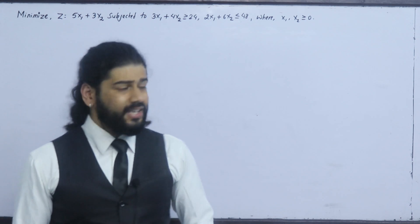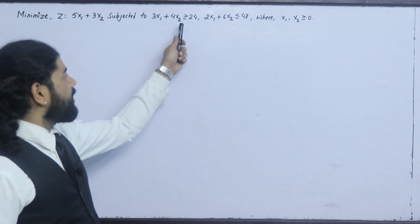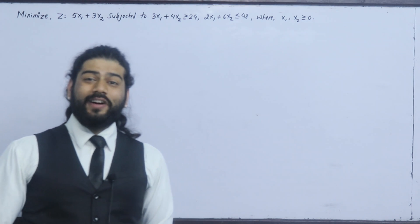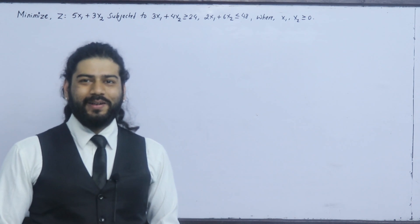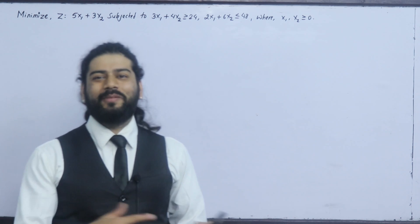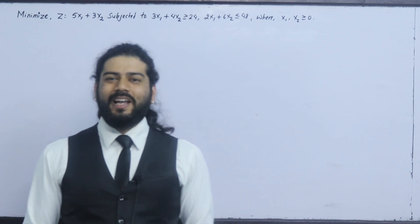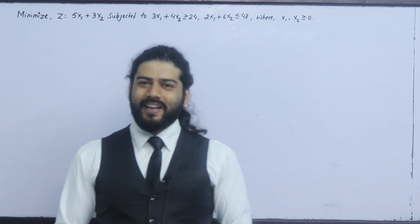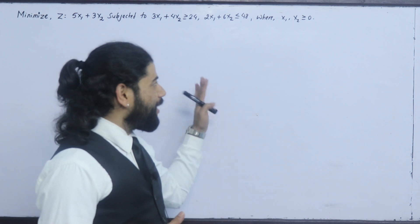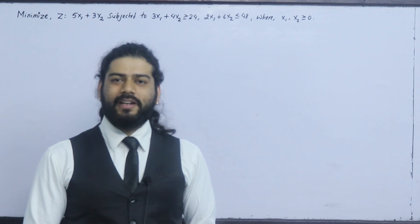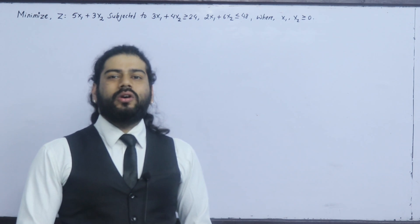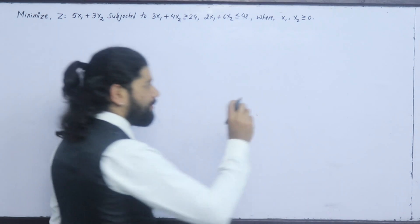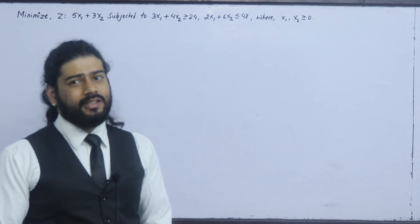There is a pattern here. For the first constraint with greater than or equal to, and the second with less than or equal to, we handle them differently. You can learn this part from the previous class, part 1. Here is a simple shortcut: for less than or equal to, we add a slack variable. For greater than or equal to, we subtract a surplus variable and add an artificial variable. For equal to type, we add only an artificial variable.